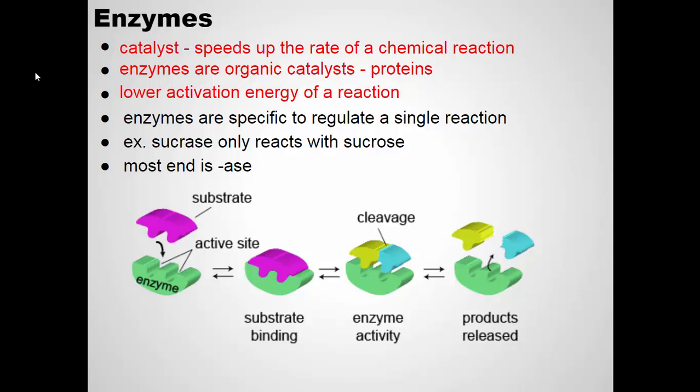Enzymes are very specific — one enzyme only catalyzes a very specific chemical reaction. For example, if this is sucrose, sucrose is a disaccharide — it has two monosaccharides combined. There is an enzyme in our body that helps us digest sucrose. Typically, enzymes are named ending in -ase and named after the molecule they work on. So sucrase interacts with sucrose to help it be digested.